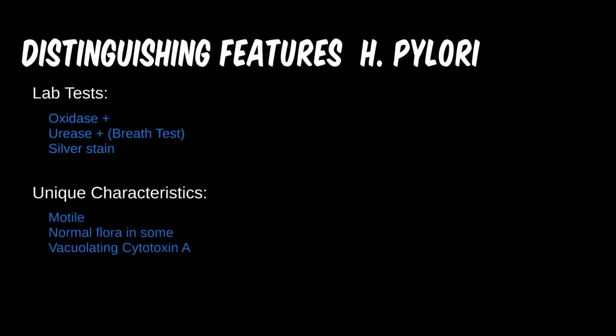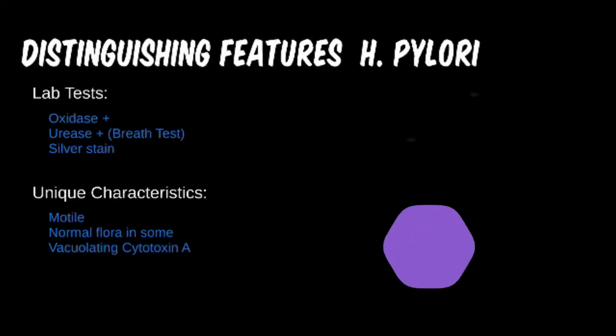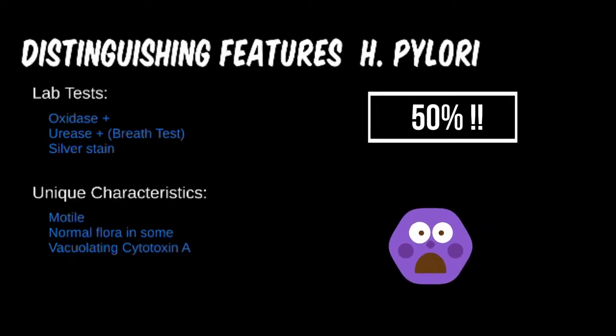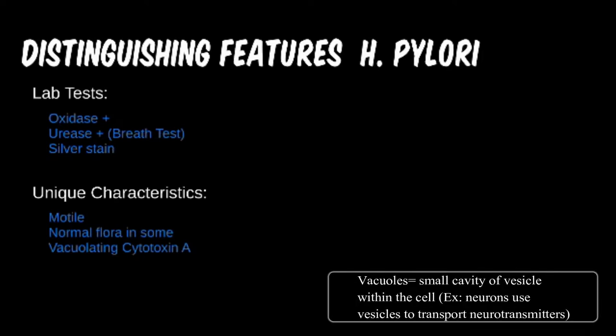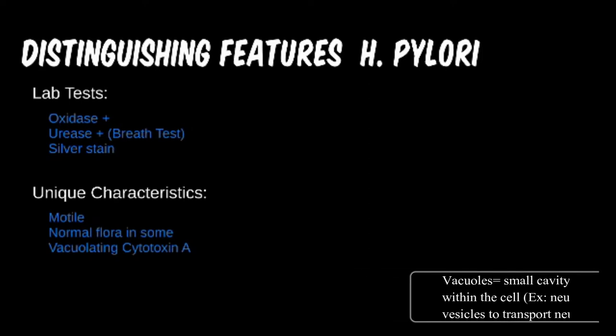H. pylori is a motile bacterium, and what is interesting is the prevalence. It is found in about 50% of the world's population, and as we don't all have ulcers, this indicates there is another mitigating factor that predisposes some to further disease. VacA is a toxin that causes vacuolating within the stomach cells, leading to damage in these cells. With improperly functioning cells, the GI tract becomes more susceptible to the acidic environment.